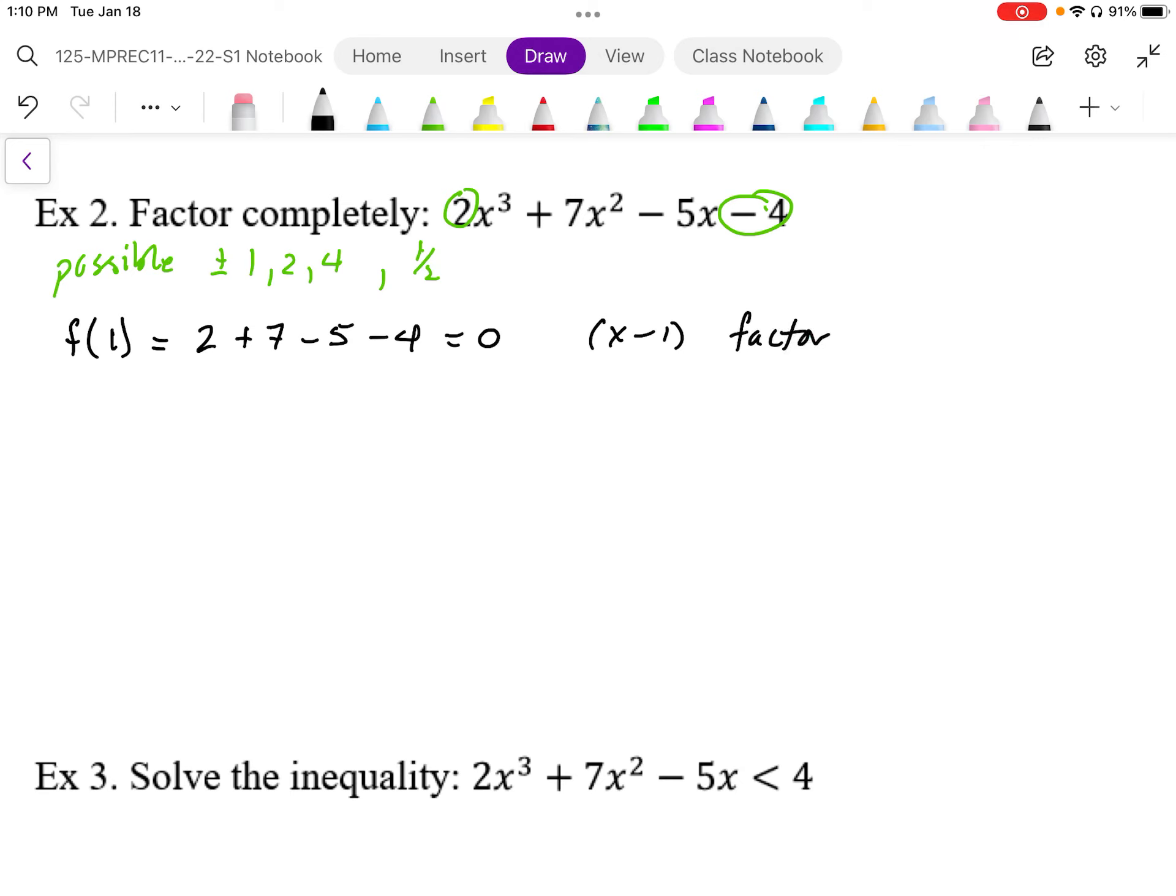So then, if it's a factor, we know it divides evenly into this expression. So I'm going to use synthetic division here. 2, 7, negative 5, negative 4. So bring that down.